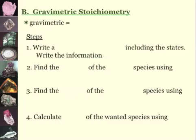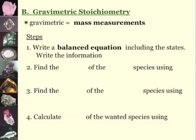Now, when we look at gravimetric stoichiometry, gravimetric means a mass measurement. Your steps are: 1. You need to write a balanced equation, including the states.